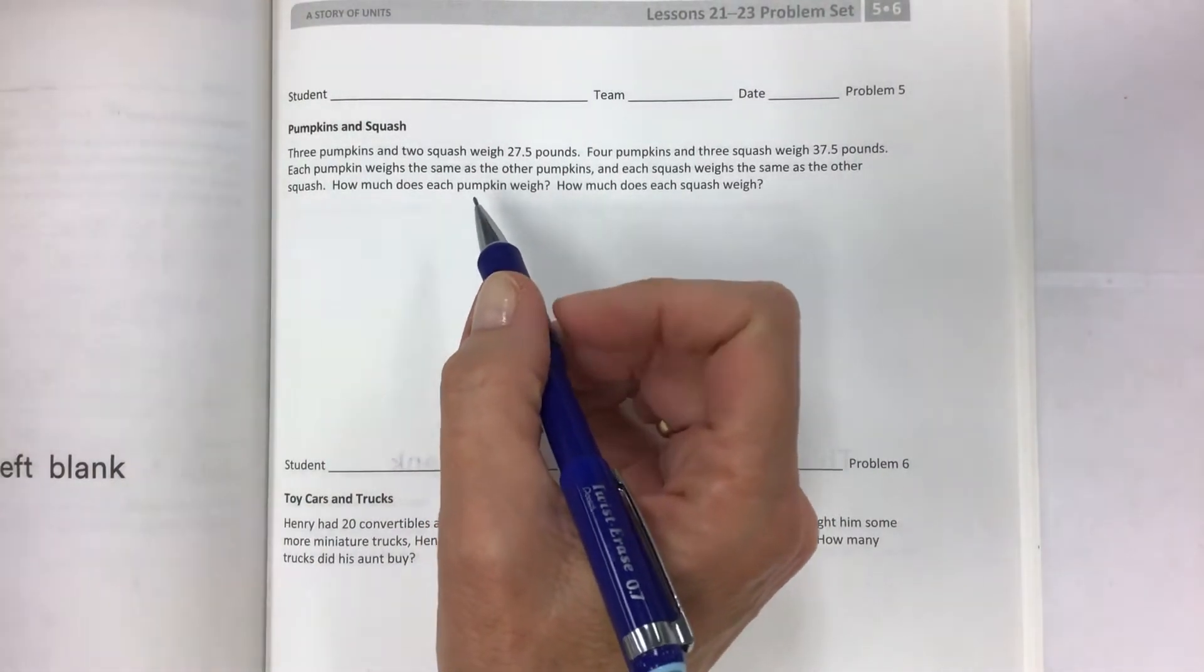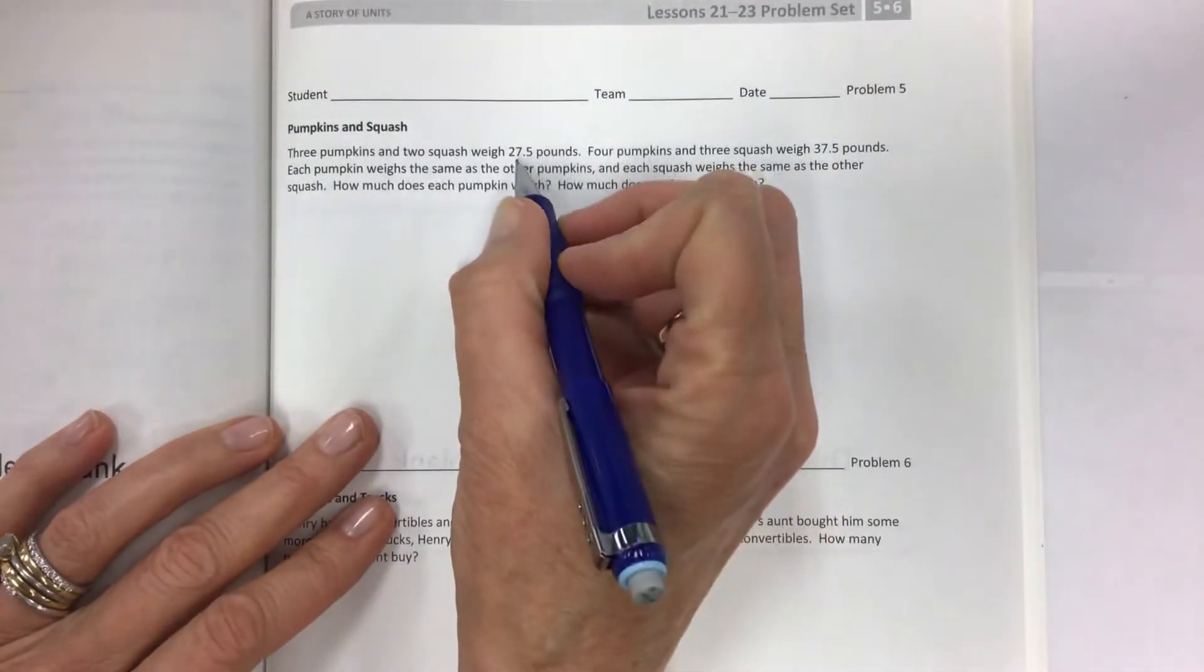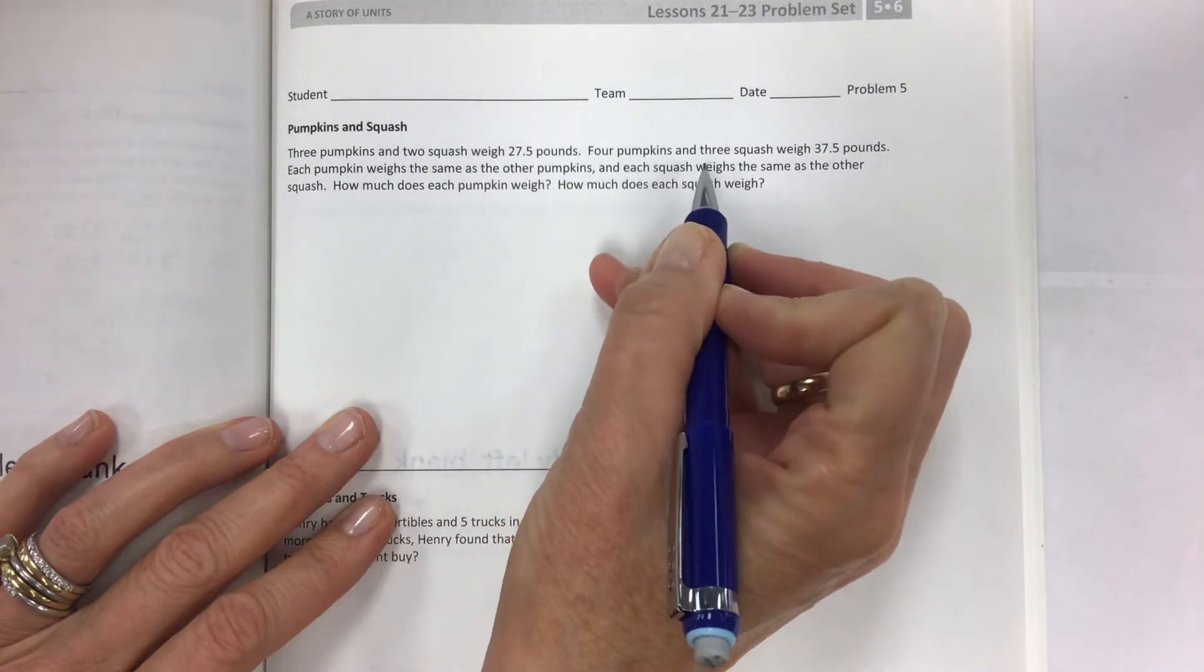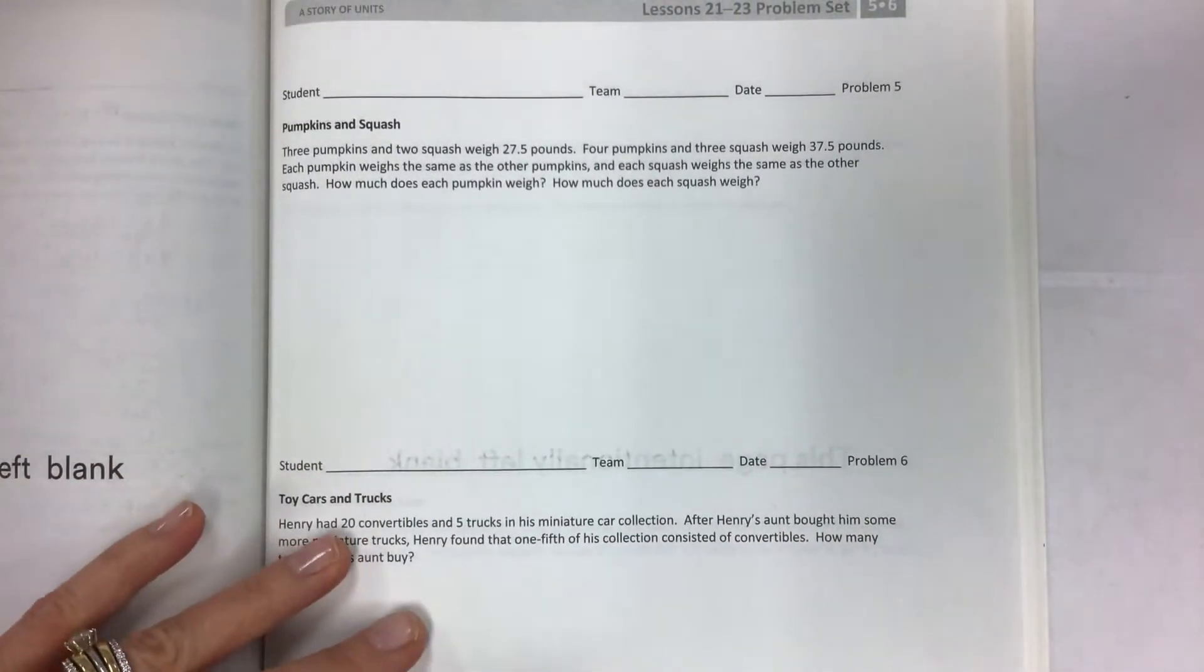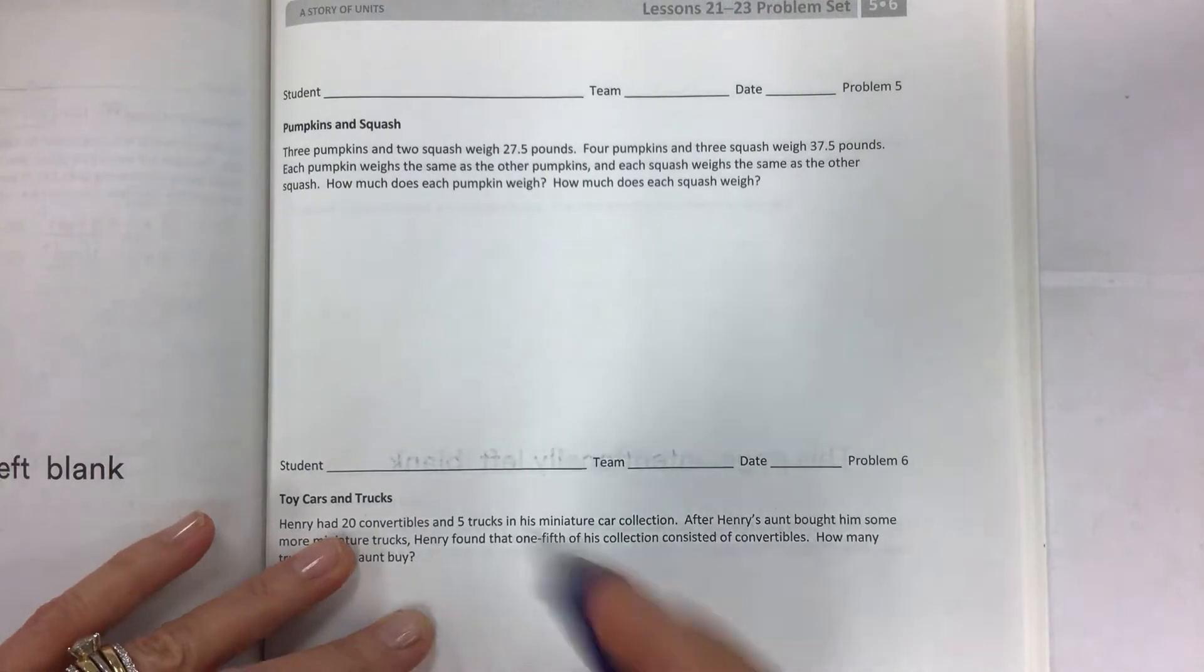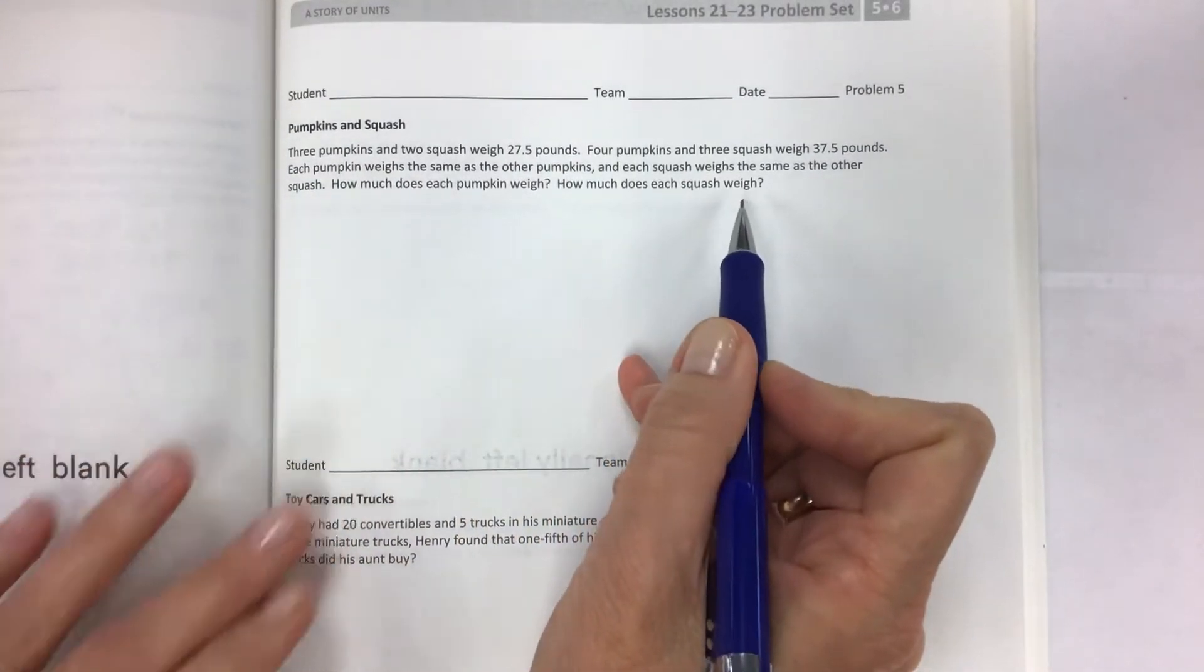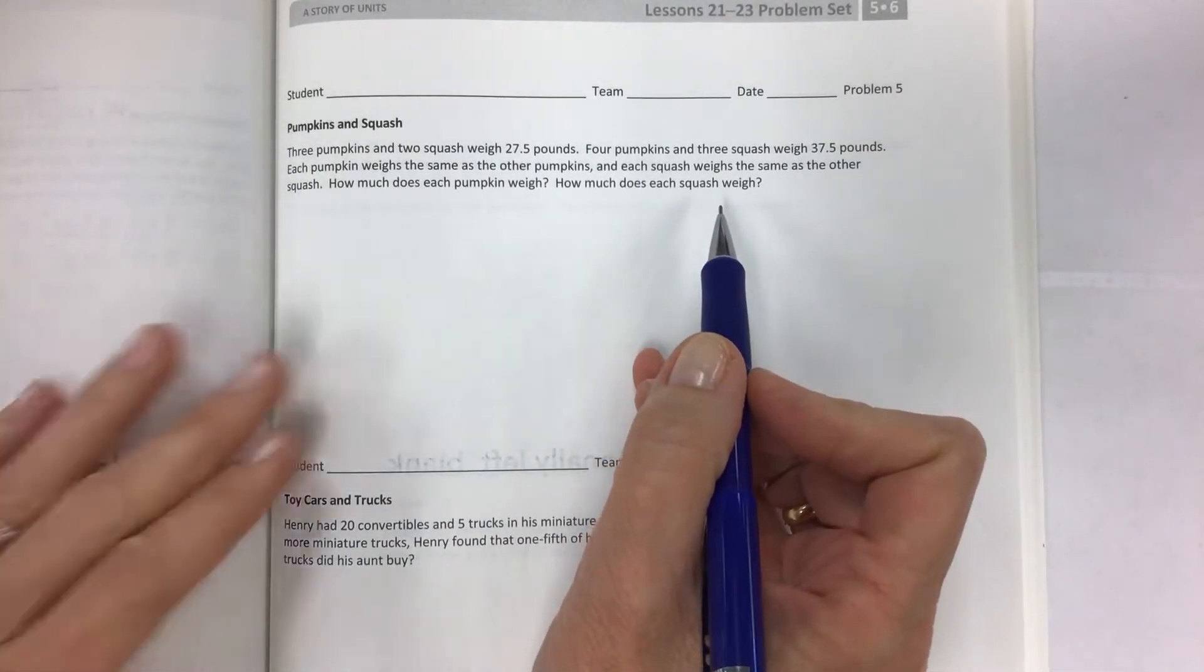Here we have three pumpkins and two squash weigh 27.5 pounds. Four pumpkins and three squash weigh 37.5 pounds. Each pumpkin weighs the same as the other pumpkins, and each squash weighs the same as the other squash. How much does each pumpkin weigh and how much does each squash weigh?